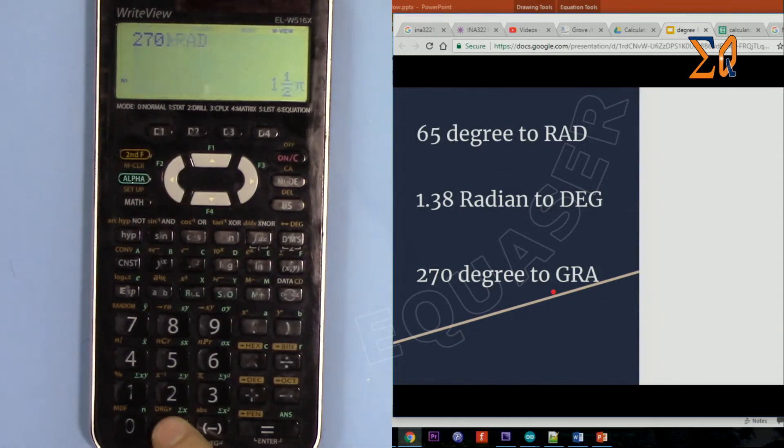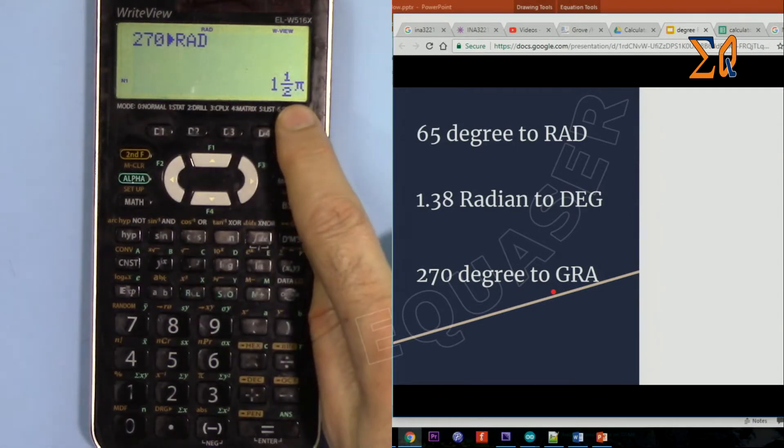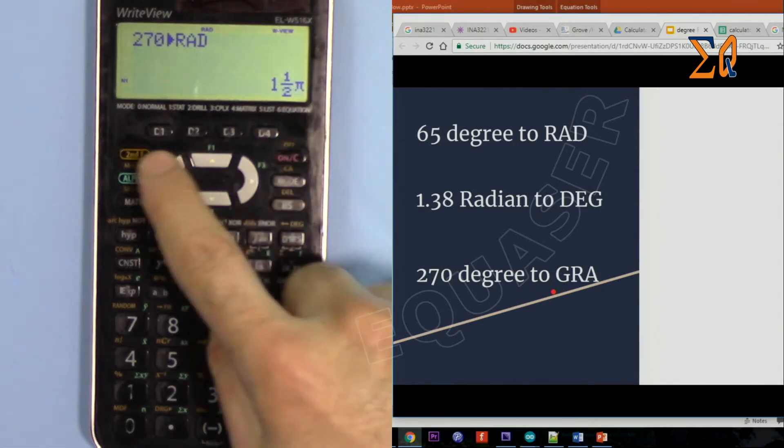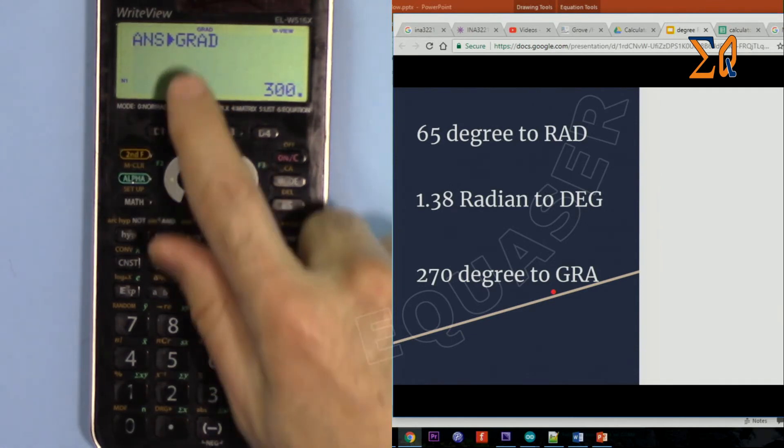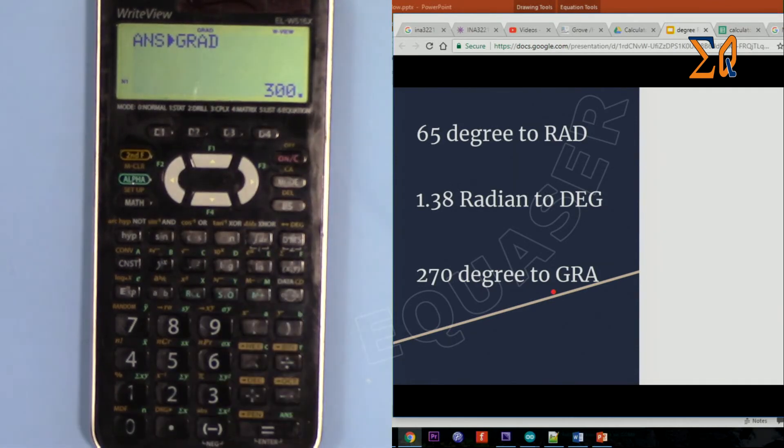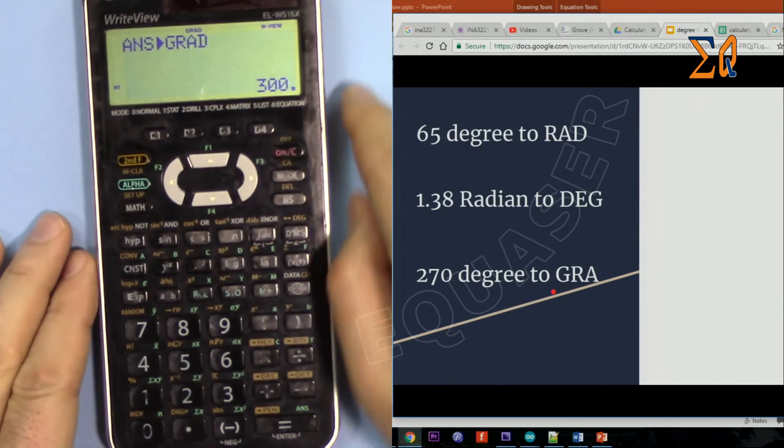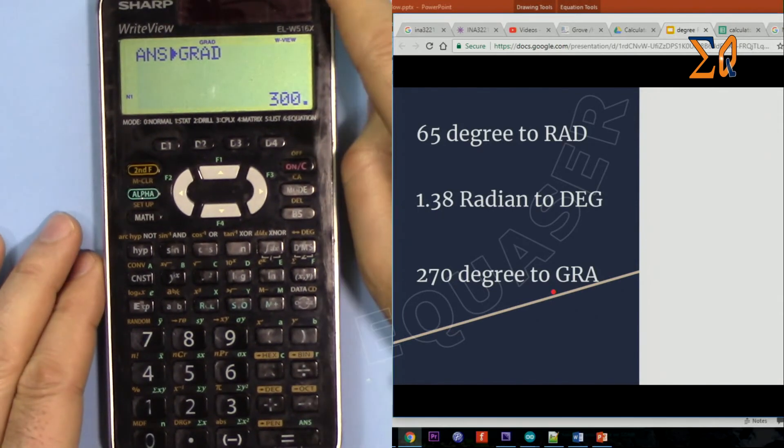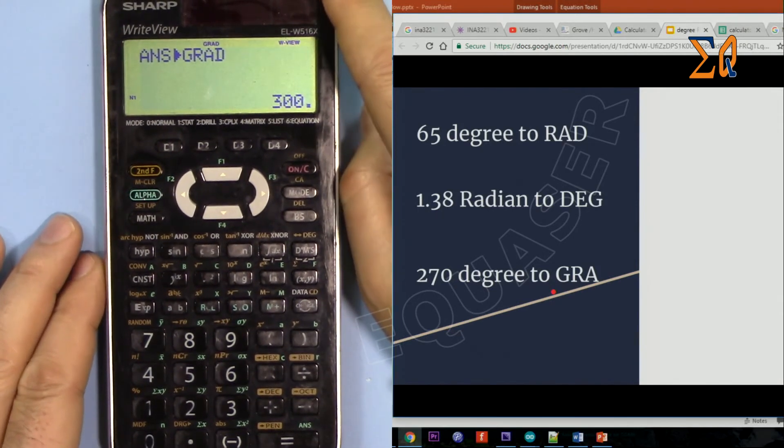If you want to convert degree to gradient, we are in degree, that's good. 270, and then second function, this button, it's radian, so that is this value. By second again, second function, so that's gradient which is 300 degrees. Remember to be in the format that you want to start with.